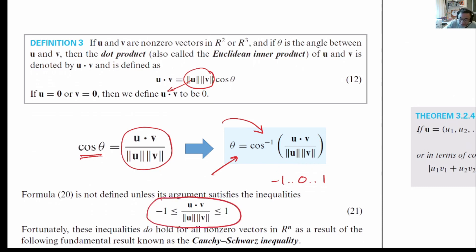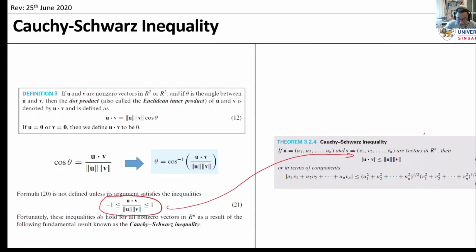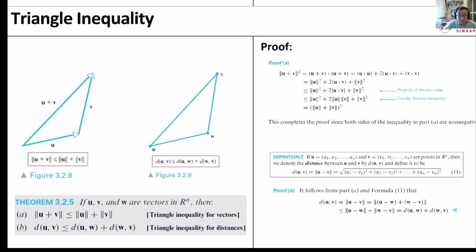Now, making use of Cauchy-Schwarz, we know that this value is definitely less than or equal to 1, greater or equal to minus 1. We next turn our attention to the triangle inequality.